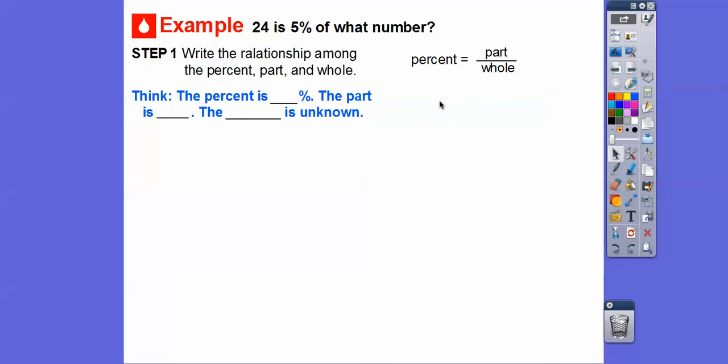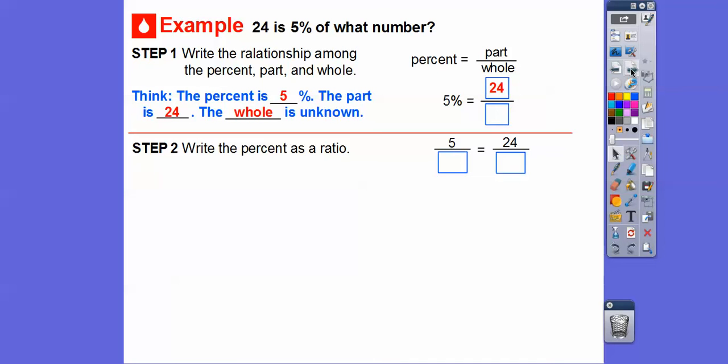The percent is 5%, so we're going to put 5% right here. And the part is the 24, so 24 goes right here. And then the whole is the unknown.